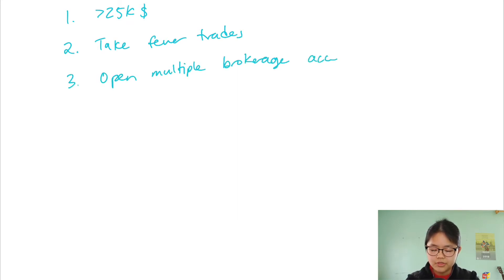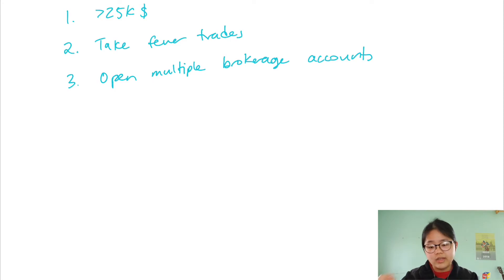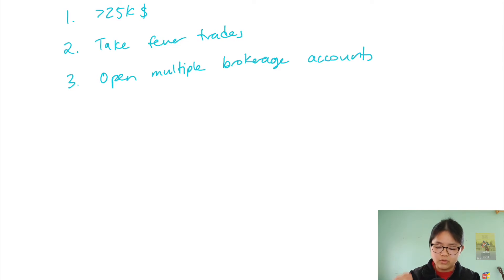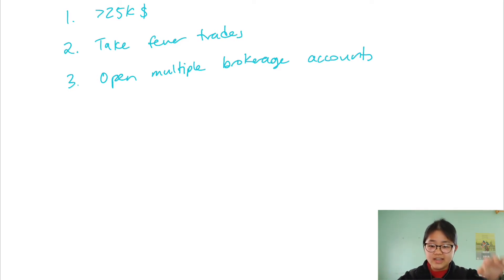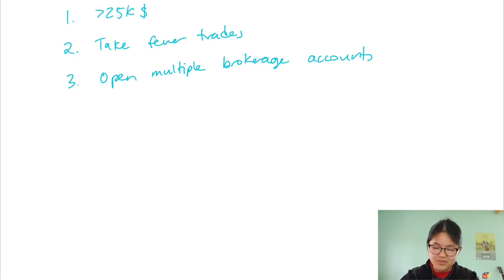Thirdly, you can open multiple brokerage accounts. The PDT rule applies on a per-account basis. So for example, if you had $10,000 to invest and trade, you could open two $5,000 accounts and take three day trades in any five-day period on each, essentially allowing you six day trades over any five-day period. And if you're feeling really ambitious, you could do ten $1,000 accounts and take basically 30 day trades over any five-day period.